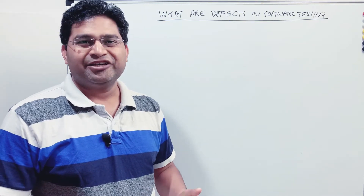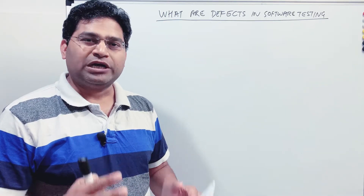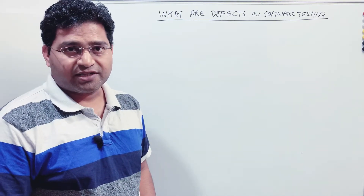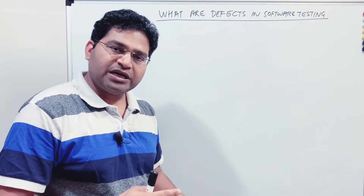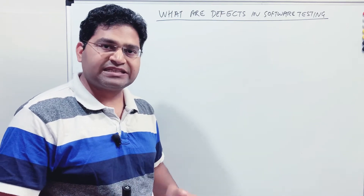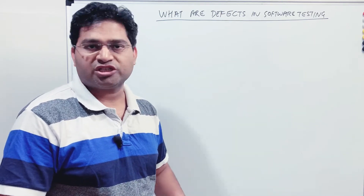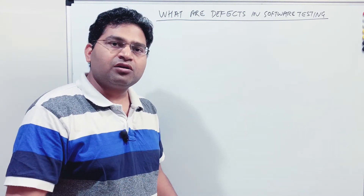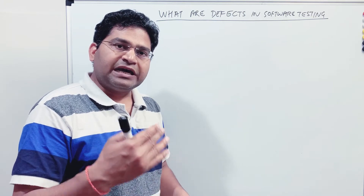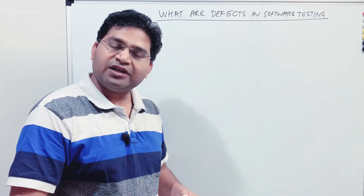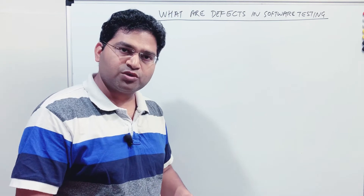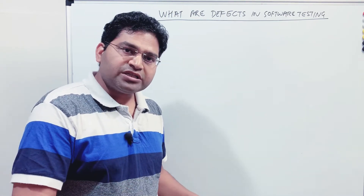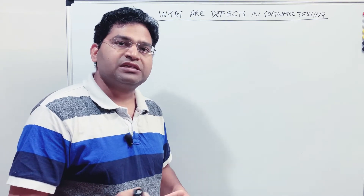Welcome again to the software testing tutorial. We are going to learn what defects are in software testing. Defects are also known as bugs, and bug and defect are used interchangeably in any projects you will go through in an actual organization. If you browse the internet there are a lot of definitions saying there is a difference between bug and defect, and there is a difference, but in actual real projects nobody is going to bother about those minute differences.